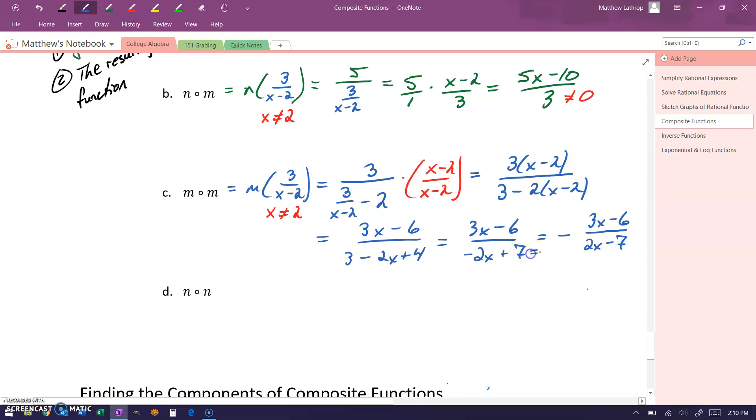Either way, we can look at that denominator, set equal to 0. Or more specifically, say that we want that denominator to never be equal to 0, which would give us x cannot be equal to 7 halves.